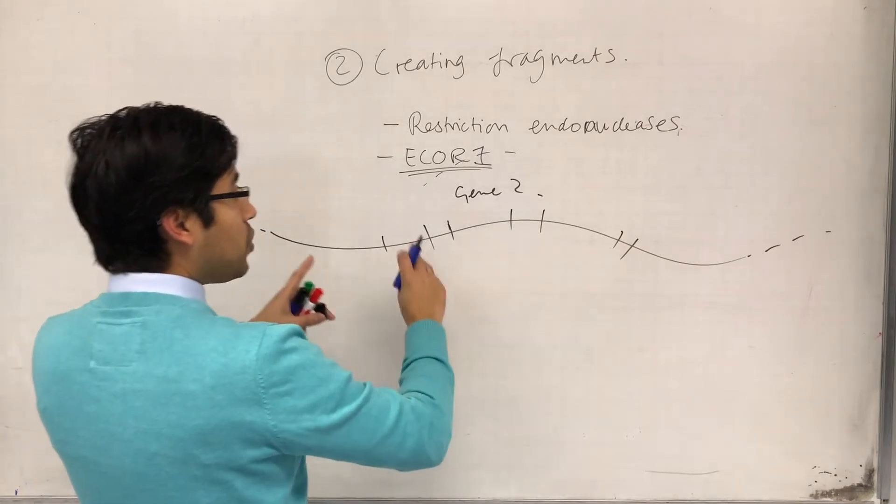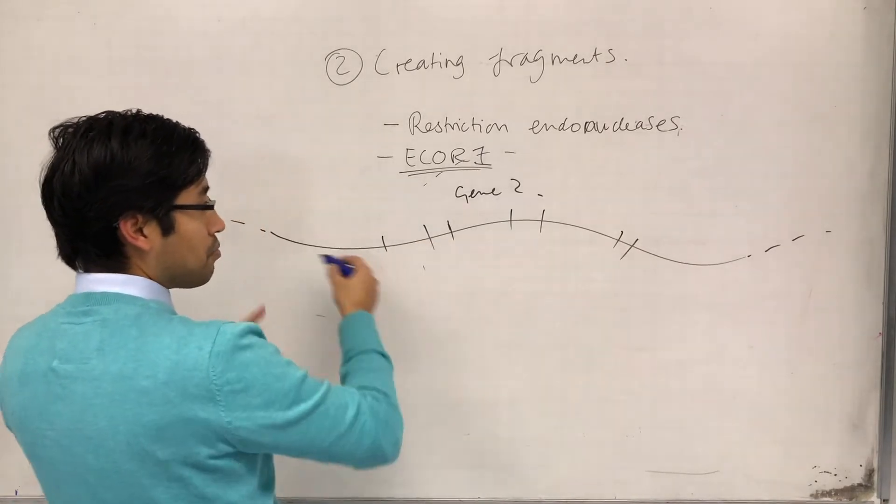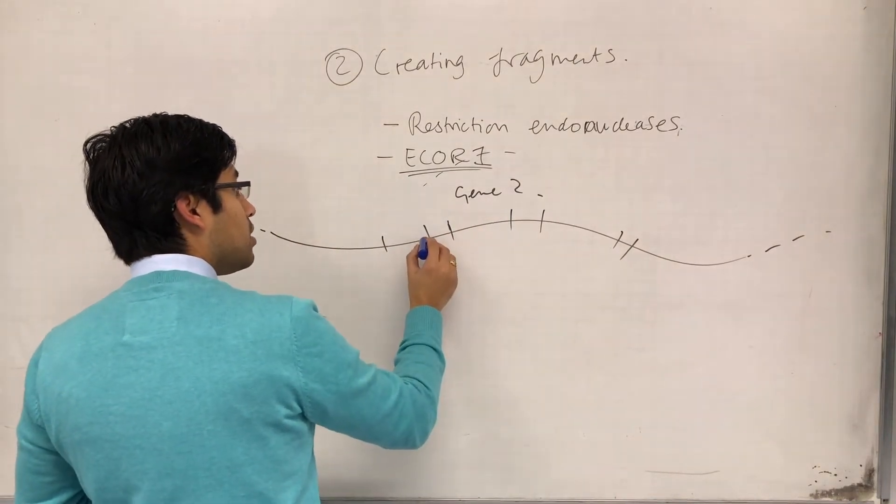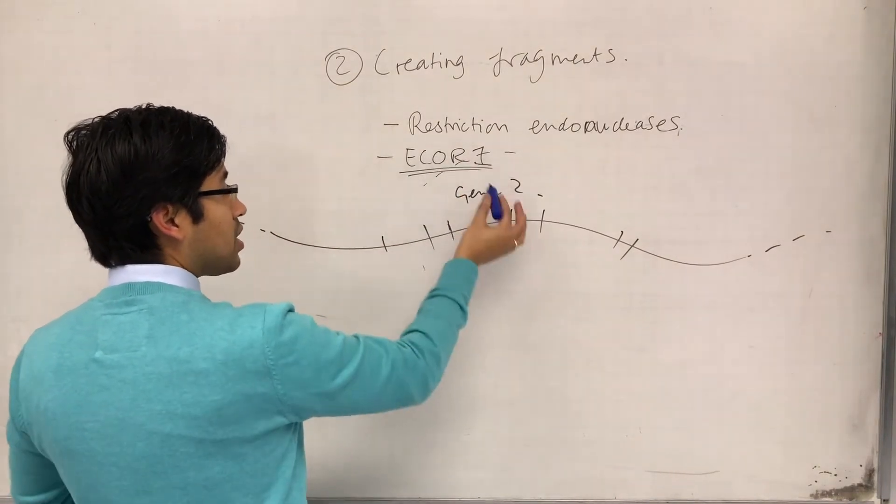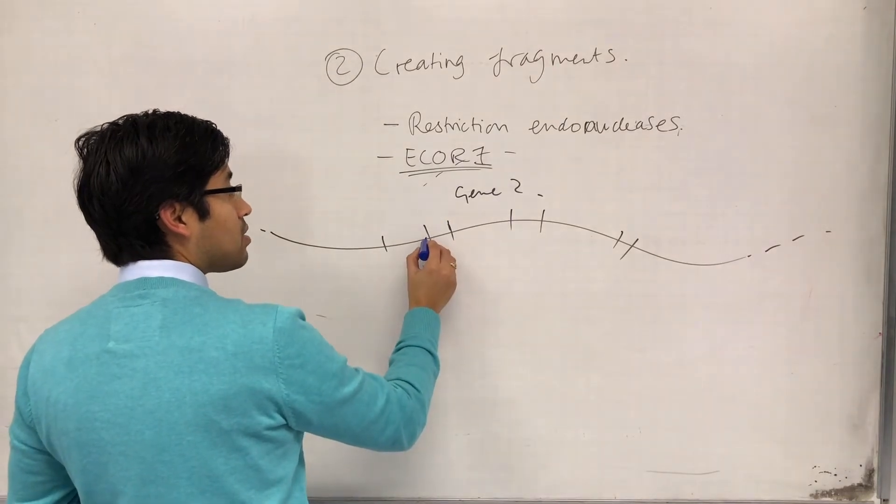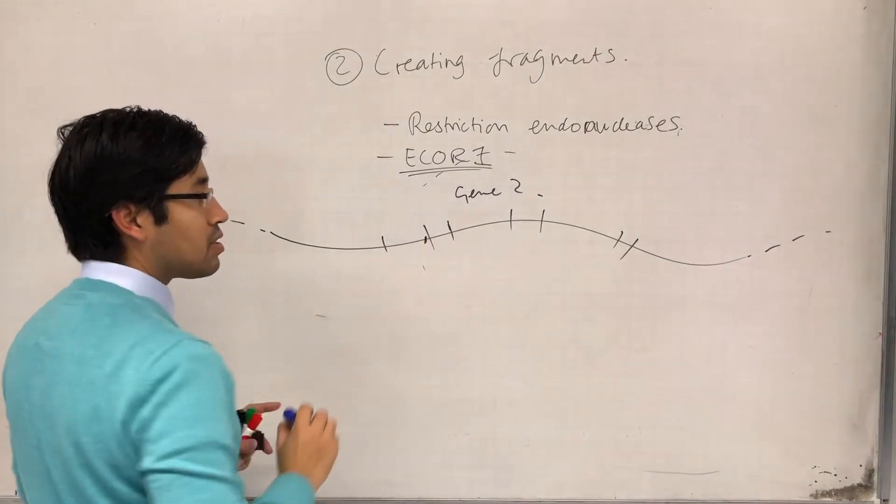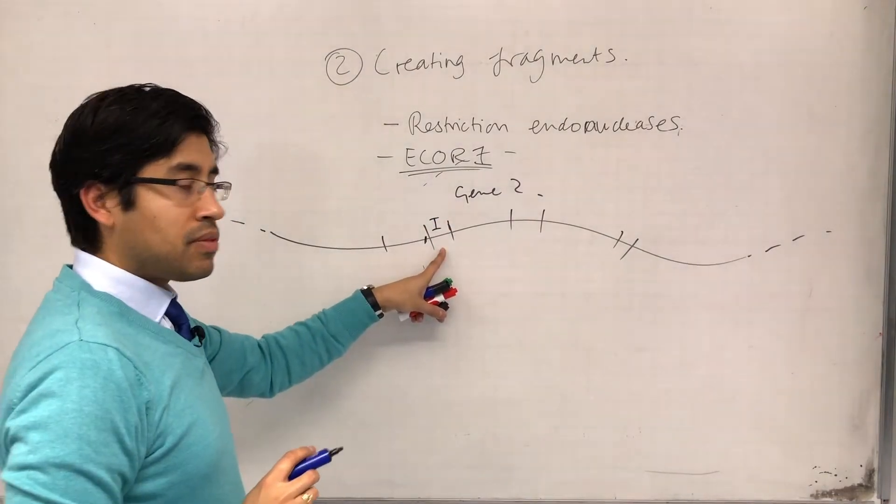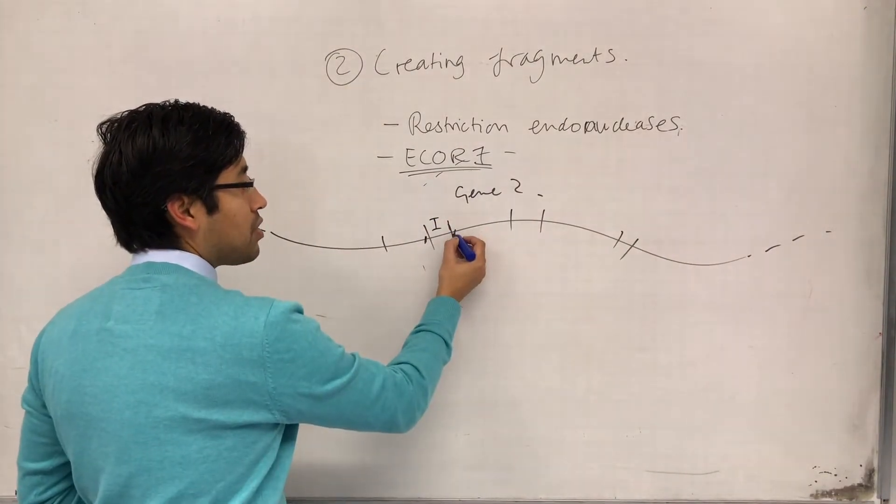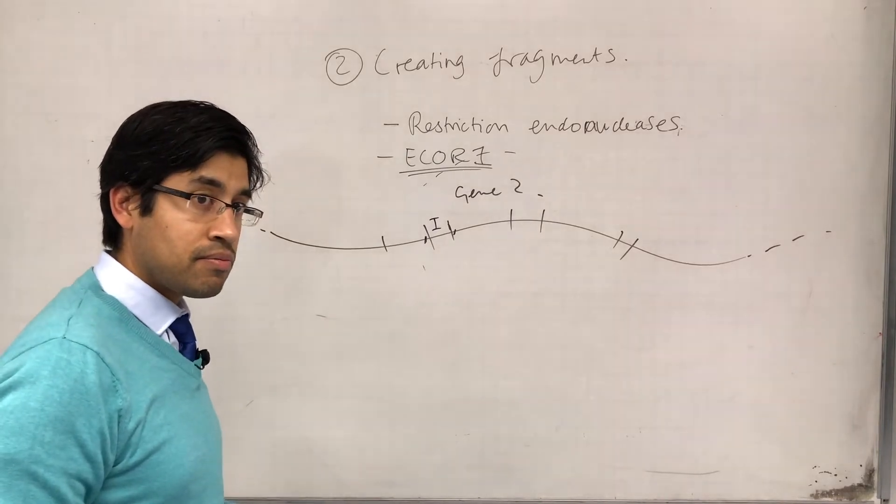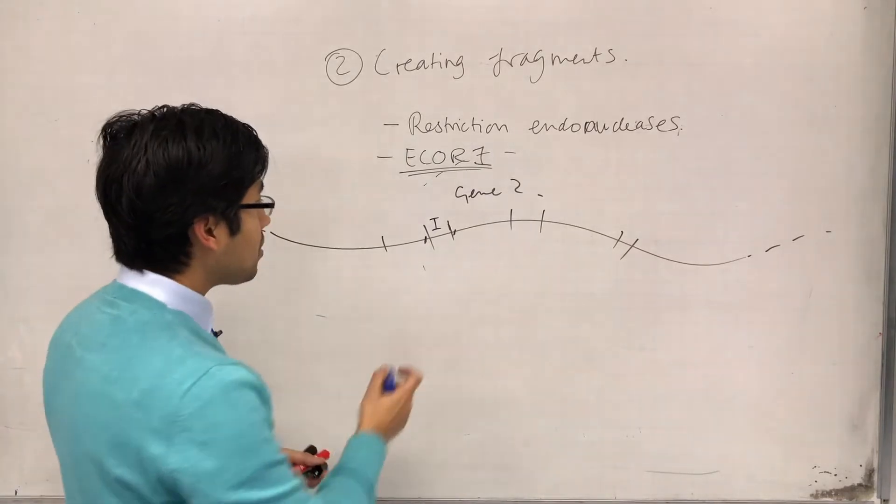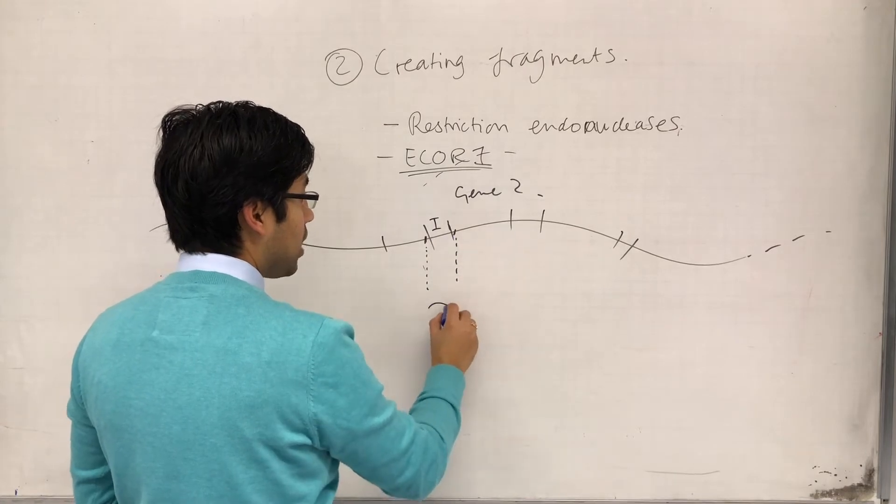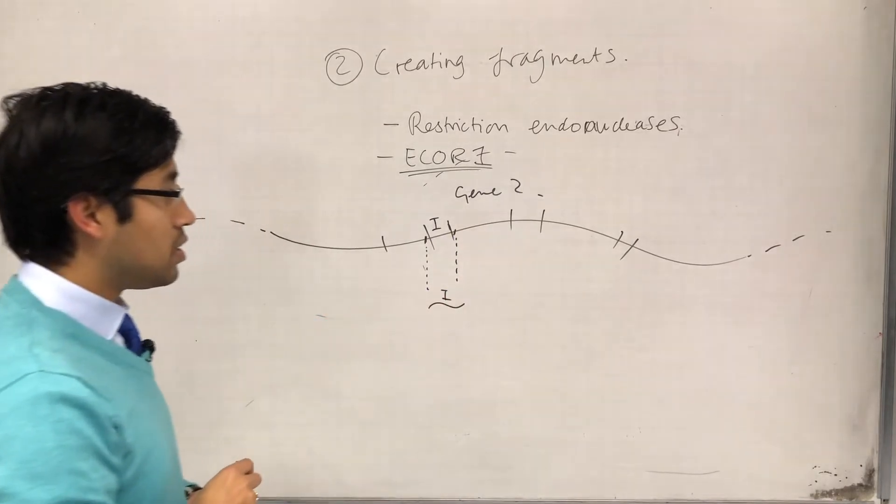What we could do is we could, because we have information about these DNA sequences, we could use a restriction endonuclease that cuts at a site on this side of one intron and on the other side of that intron. What would happen is that we would therefore cut that intron out.